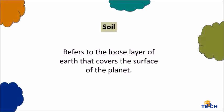So what is soil? It is a very broad term and it refers to the loose layer of earth that covers the surface of the planet. The soil is the part of the earth's surface which includes disintegrated rock, humus, inorganic, and organic materials.